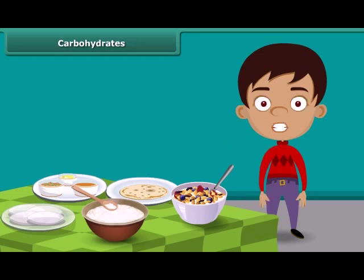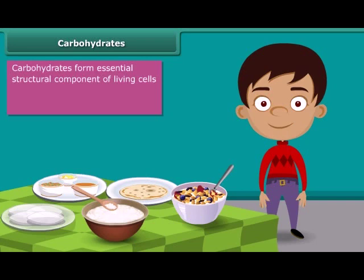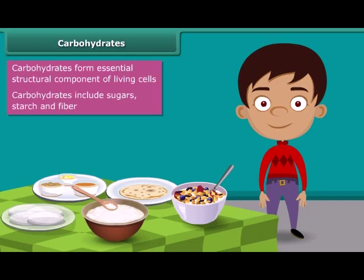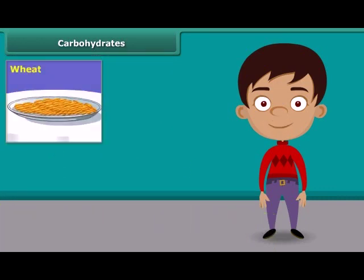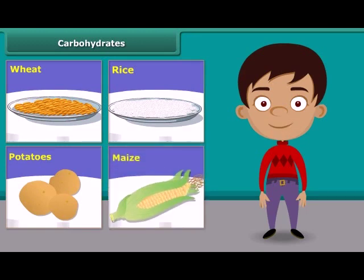First, carbohydrates. Carbohydrates form an essential structural component of living cells. They are the main source of energy for animals. Carbohydrates include sugars, starch, fiber, etc. They are mainly found in wheat, rice, potatoes, corn and maize.